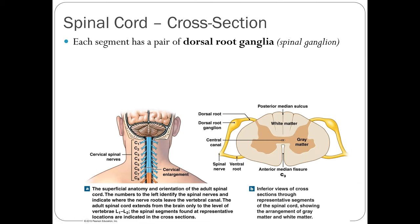Each of the 31 segments of the spinal cord has a pair of dorsal root ganglia coming off the posterior side — identifiable by the posterior median sulcus. The dorsal root comes off the posterior side, leading to the swollen region called the dorsal root ganglion, also called the spinal ganglion. The word ganglion refers to neuron cell bodies found outside of the CNS, which technically ends with the spinal cord.